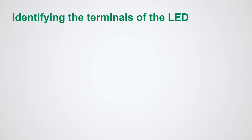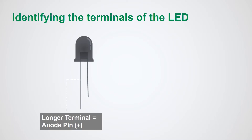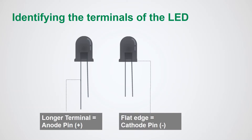You can identify the terminals of the LED in the following ways. First, you can try to find the longer terminal, which should indicate the positive terminal. If both the terminals are trimmed, then try finding the flat edge on the LED's outer casing. The pin nearest to the flat edge indicates the negative terminal, the cathode pin.